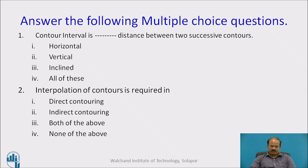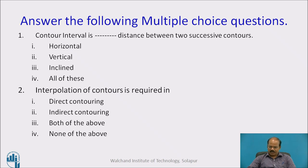Learners, pause the video for a while and let us take feedback on how much we have understood from today's online educational resource. Question 1: Contour interval is __ distance between two successive contours — options: horizontal, vertical, incline, all of these. The answer is vertical distance. Question 2: Interpolation of contours is required in — direct contouring, indirect contouring, both, or none. The answer is interpolation is required in indirect contouring.